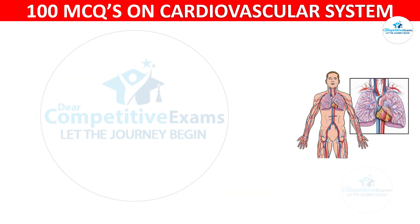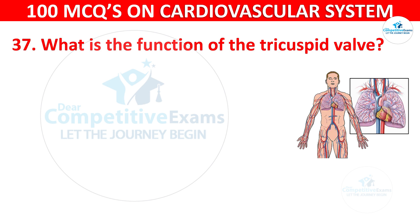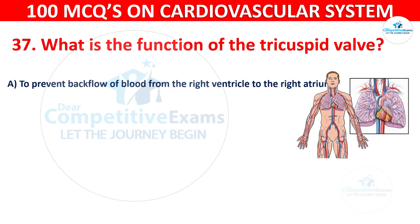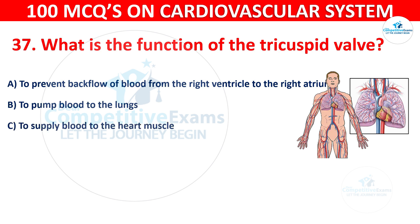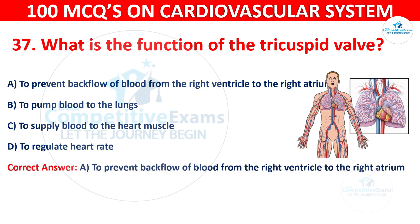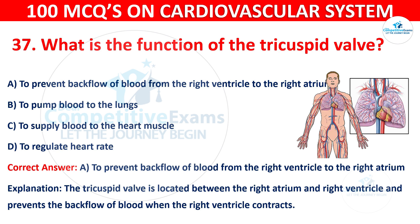Question 37: What is the function of the tricuspid valve? Options are: To prevent backflow of blood from the right ventricle to the right atrium, To pump blood to the lungs, To supply blood to the heart muscle, or To regulate heart rate. The correct answer is A, to prevent backflow of blood from the right ventricle to the right atrium. The tricuspid valve is located between the right atrium and the right ventricle and prevents backflow of blood when the right ventricle contracts.